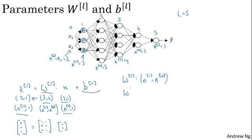And more generally, the dimensions of wl must be nl by nl minus 1. So for example, the dimensions of w2, for this, it will have to be 5 by 3, or it will be n2 by n1. Because we're going to compute z2 as w2 times a1.